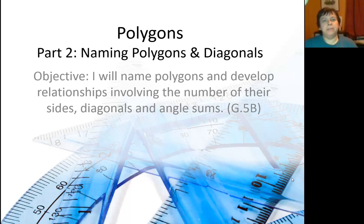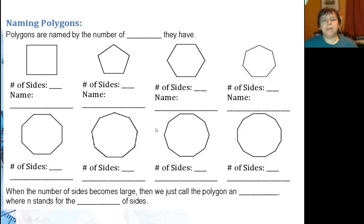Now we'll look at how to name polygons and find how many diagonals they have. Polygons are named by the number of sides they have.